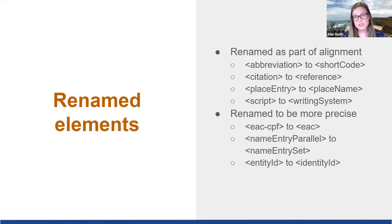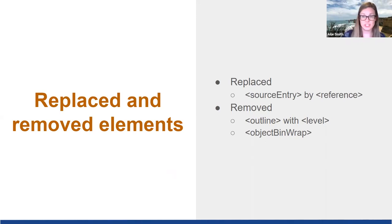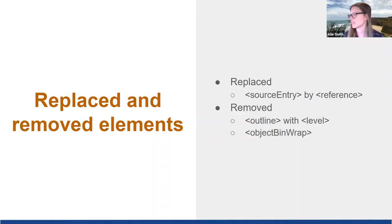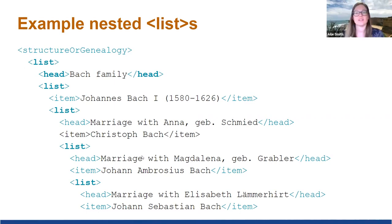We've also renamed several elements to be more precise. The top element EAC-CPF is now just EAC, and name entry parallel has been renamed name entry set. There are several replaced or removed elements: source entry has been replaced with reference, and the outline with list elements as well as object bin RAP have been removed. To encode hierarchical or complex lists previously done using outline and level, we've added the ability to nest a list element within other list elements. This is an example of creating a genealogy using nested lists. It also uses the new head element, which can be used to encode titles or captions within lists and core text.